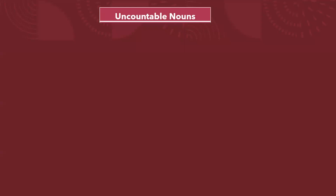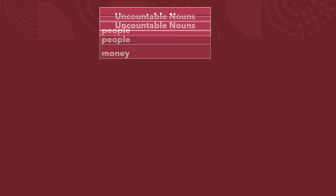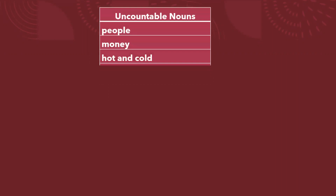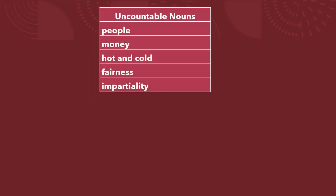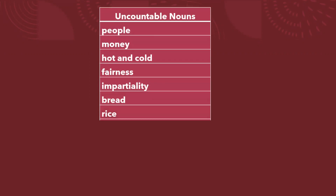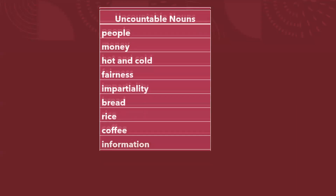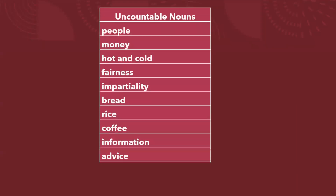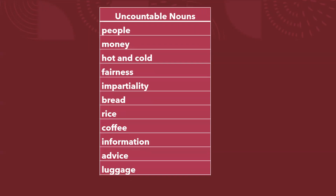Uncountable nouns: people — when you talk about the concept of people, population — money, hot and cold, fairness, impartiality, bread, rice, coffee, information, advice, luggage, and furniture.